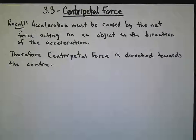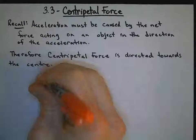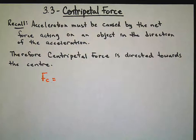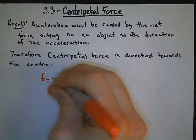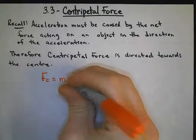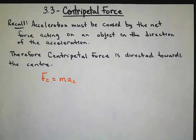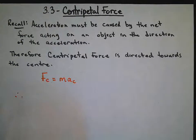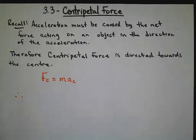So, from Newton's second law, my centripetal force Fc is therefore mass multiplied by my centripetal acceleration. Therefore, we have three different formulas for centripetal force as well.